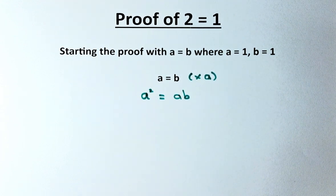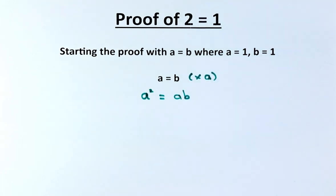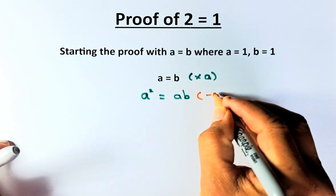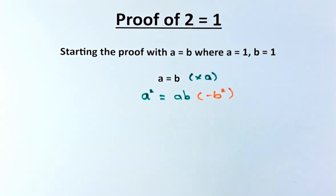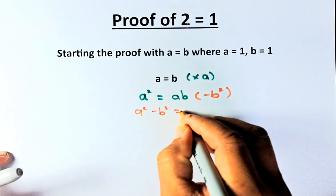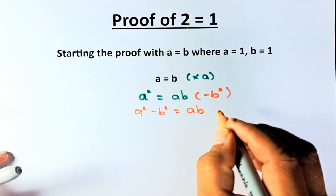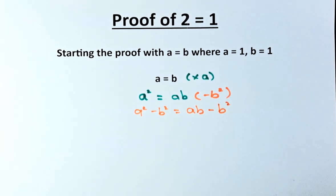Next step we're going to do is that we are going to minus B squared on both sides of the equation. So this becomes A squared minus B squared on the left and on the right it becomes AB minus B squared. Are you following me? Hopefully you are.